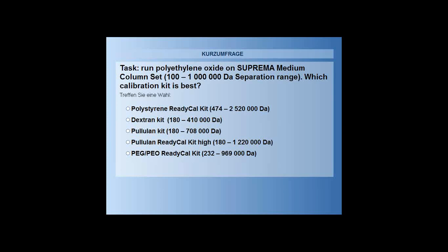Self-evaluation question one: if you have polyethylene oxide on a Suprema medium column set with a separation range of 100 to 1 million Dalton, which calibration kit would you use? Options: polystyrene kit (500 to 2.5 million), dextran kit (180 to 400,000), polyethylene kit (180 to 708,000), polyethylene kit (180 to 1.2 million), or polyethylene glycol/polyethylene oxide kit (200 to 996,000 Dalton)?